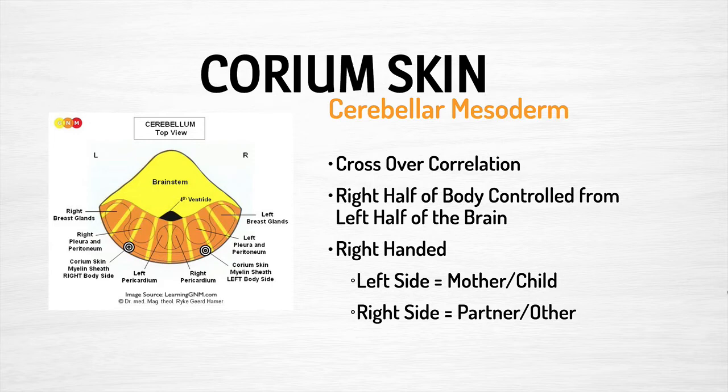There is a crossover correlation in the cerebellum, which means that the right half of the body is controlled from the left half of the brain. So if you are a right-handed person experiencing a conflict having to do with your mother or your child, the manifestation of the issue with the corium skin will show up on the left side — that's your mother-child side — versus if it was a partner or another person, it would be on your right side.